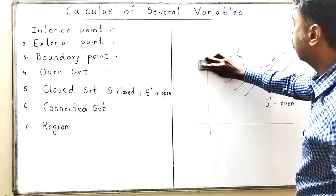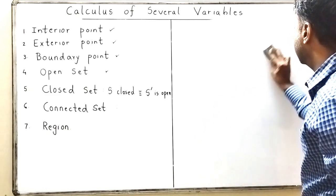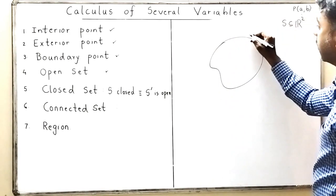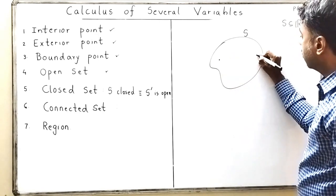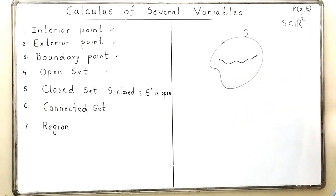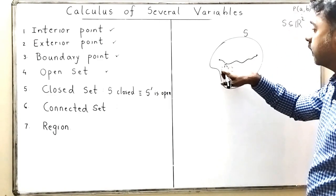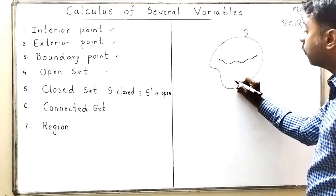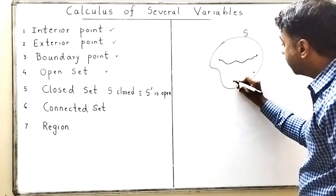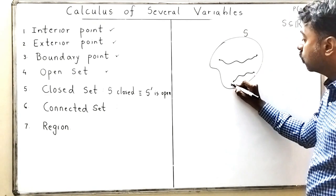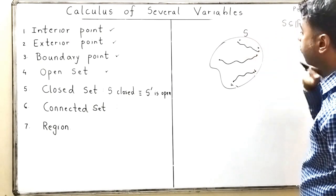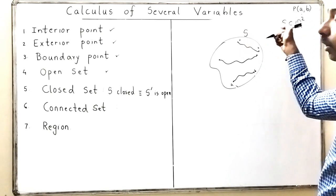Now let us go to the next definition, which is called a connected set. I take a set S in R² and I say this set S is connected — very simple definition. I take two points A and B, and I must be able to join a path between them. I can take any curve or any path, but that path should not go outside S. I must be able to draw a path completely inside set S joining the two points A and B.